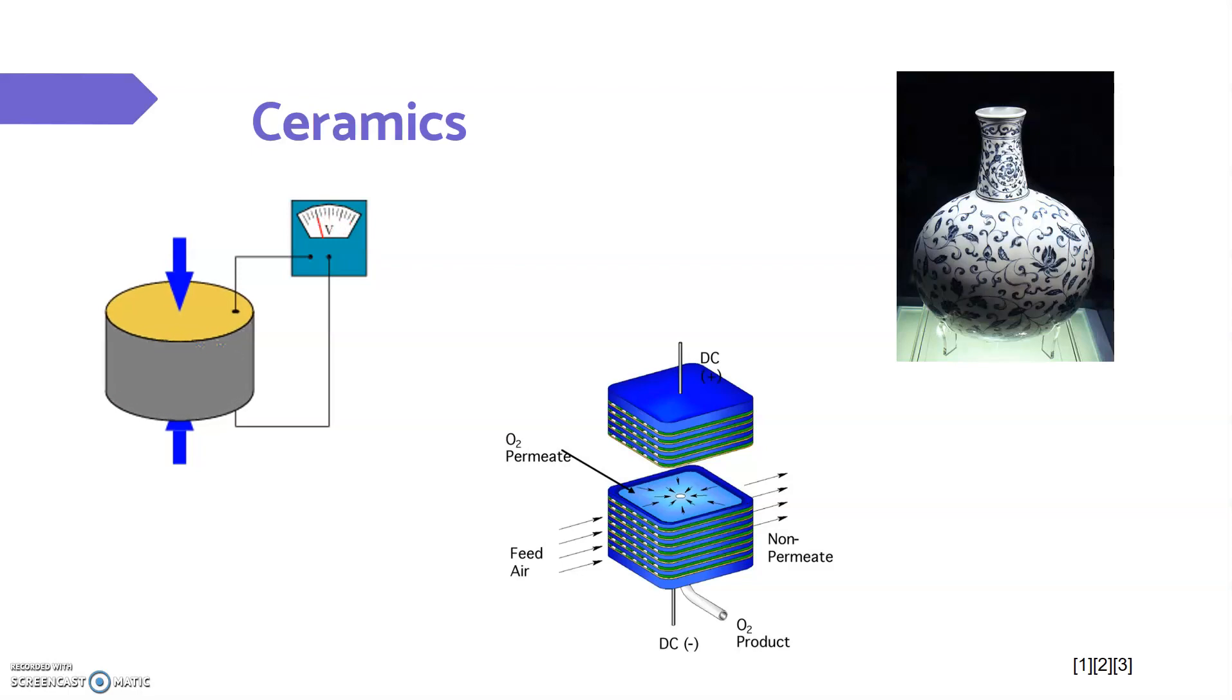Ceramics is an inorganic non-metallic solid comprising of either metals, non-metals, or metalloid atoms primarily held together by ionic or covalent bonds. They are usually crystalline. The crystalline of the ceramic material ranges from highly oriented to a semi-crystalline structure to even more of an amorphous glass-like state.